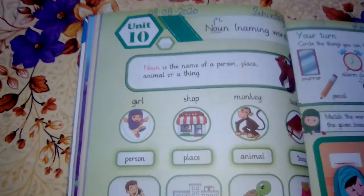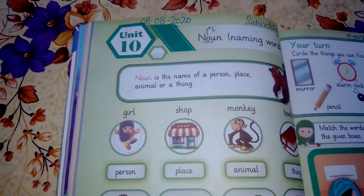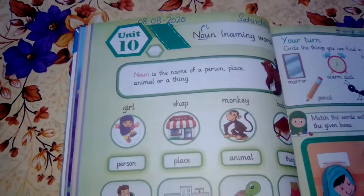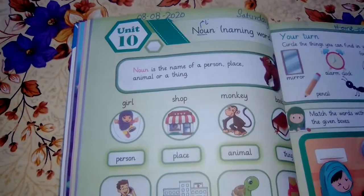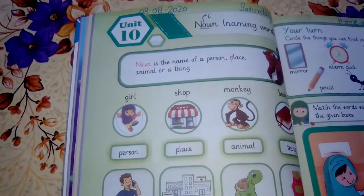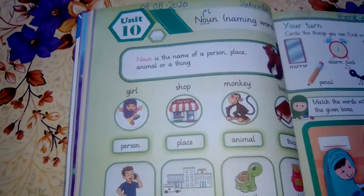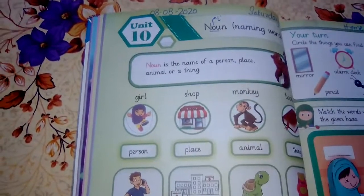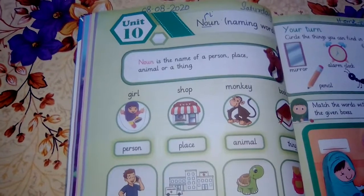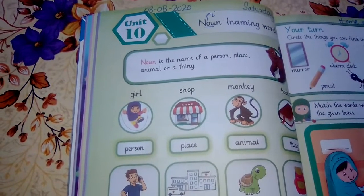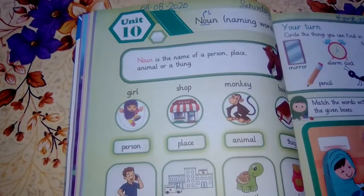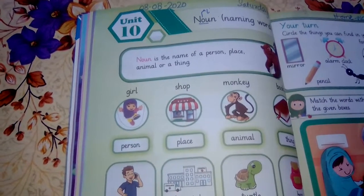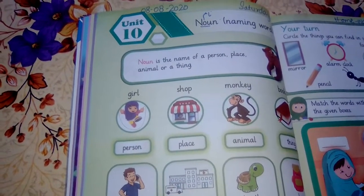Now come to the next page, page number fourteen. Mention date and day on top of the page. Unit ten — our topic is noun. Noun is a naming word — 'naam'. What is a noun? Noun is the name of a person, place, animal, or a thing. Name of a person — 'insan ka naam'. Place — 'jaga ka naam'. Animal — 'janur ka naam'. Thing — 'cheez ka naam'. That is a noun.